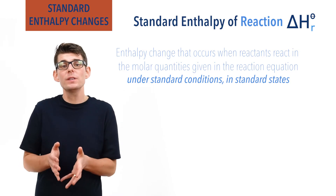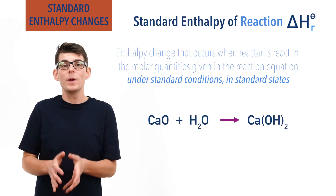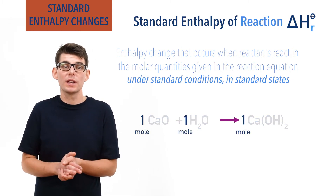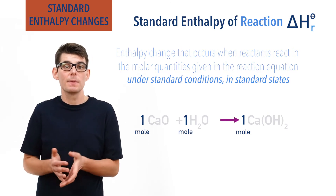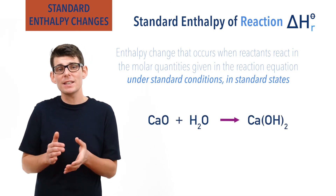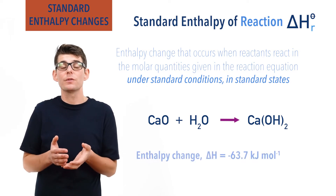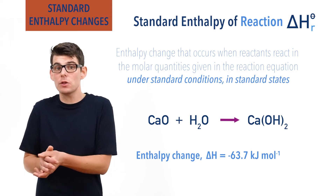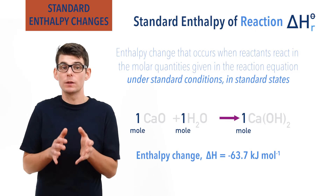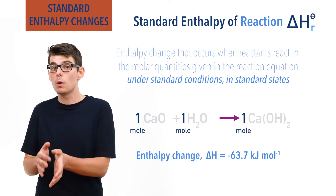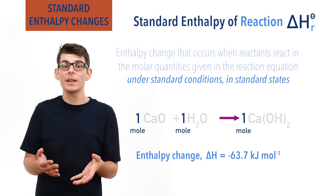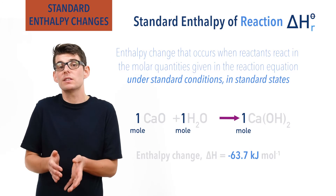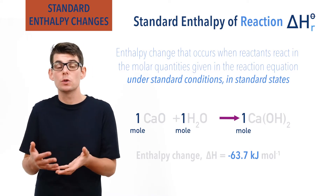For example, if we take the reaction between calcium oxide and water, we can see in the equation that one mole of calcium oxide reacts with one mole of water, and forms one mole of calcium hydroxide, Ca(OH)₂. The standard enthalpy change for this reaction is minus 63.7 kilojoules per mole. This means that, under standard conditions, when one mole of calcium oxide and one mole of water react together to form one mole of calcium hydroxide, an enthalpy change of minus 63.7 kilojoules occurs. In other words, 63.7 kilojoules of energy is released to the surroundings.